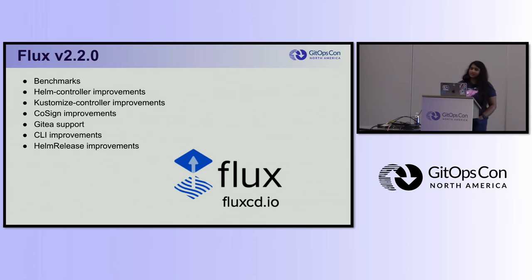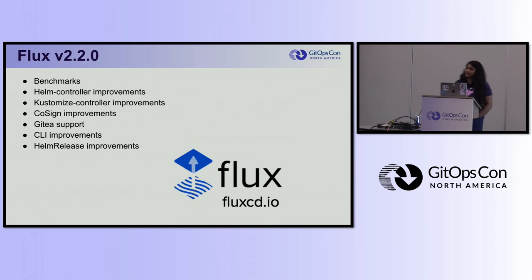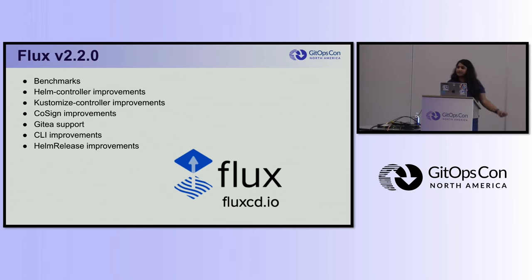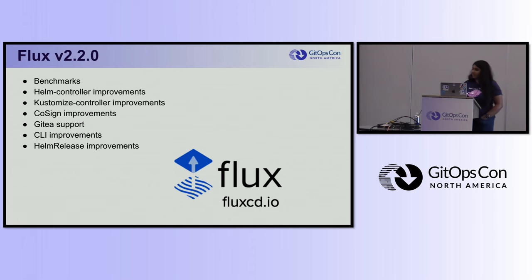Another improvement around Helm is that you can now enable drift detection and optionally correction on a per-Helm-release basis. In the Helm release v2 beta 2 API, there is an optional field where you can say you want to enable drift detection, and you can set ignore rules for certain fields. Basically, if you have something in your Helm chart that deploys things and then another controller modifies some fields, the Helm controller — if drift detection is enabled — will roll back those changes immediately.